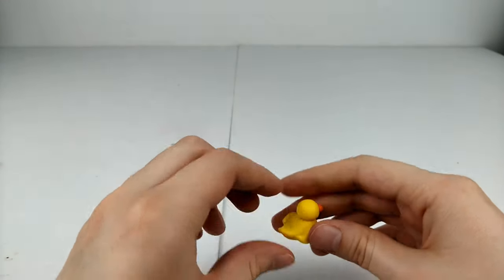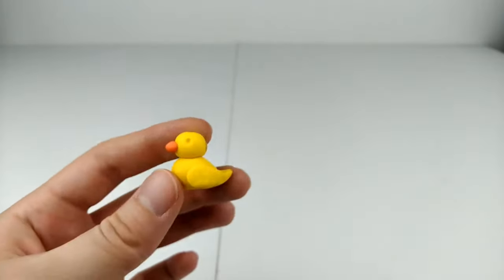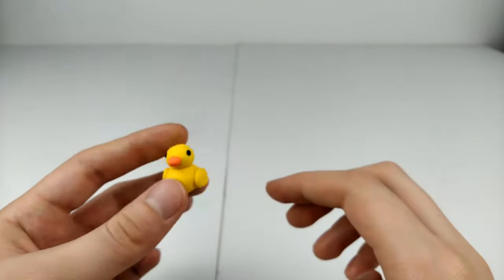Last thing on the list is to make indents in the head again and use small balls of black clay for the eyes. Then it's ready to bake and you have yourself a duck.